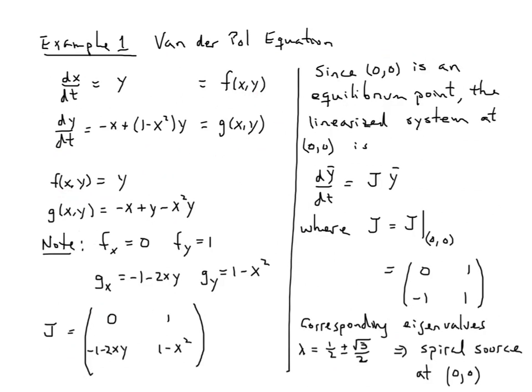Here I've rewritten them in a form that'll make it easier to compute their partial derivatives. Partial derivative of f with respect to x is zero, with respect to y is one. Partial derivative of g with respect to x is negative one, you get zero here and minus 2xy, and with respect to y we get one and negative x².